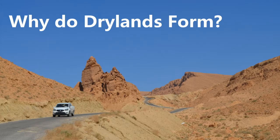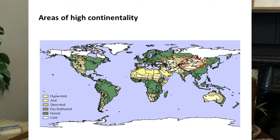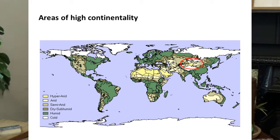There are four main reasons why we get dryland or desert regions. The first is continentality. If you have a very large landmass, the center is a long way from the oceans, which are the main source of moisture. By the time an air mass has reached central Asia, for example, it's lost most of its moisture — most precipitation has already fallen — so these interior regions become very dry.